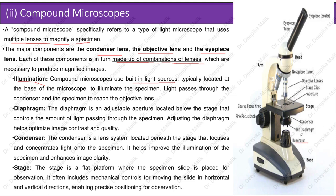The diaphragm is an adjustable aperture located below the stage that controls the amount of light passing through the specimen; adjusting it helps optimize image contrast and quality. The condenser is a lens system beneath the stage that focuses and concentrates light onto the specimen, improving illumination and enhancing image clarity.